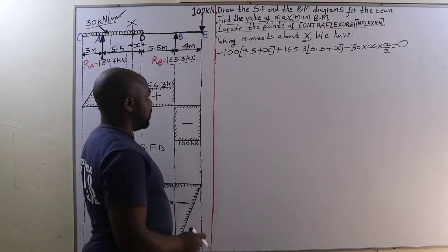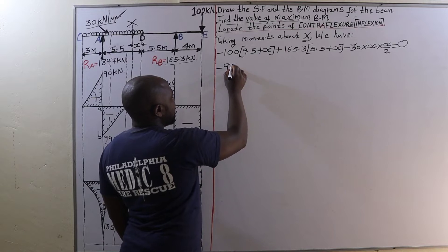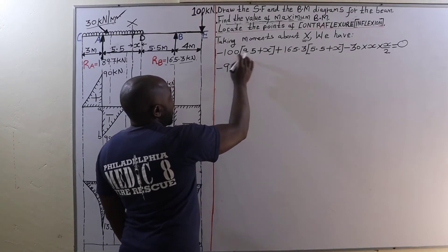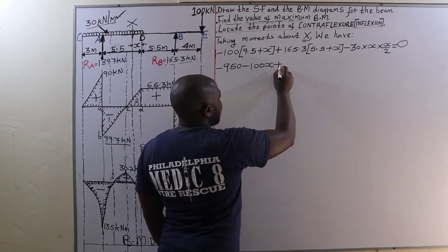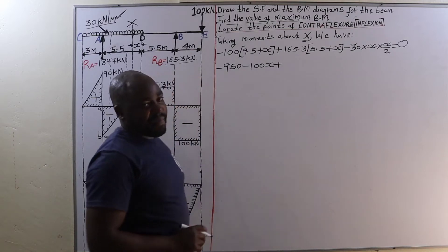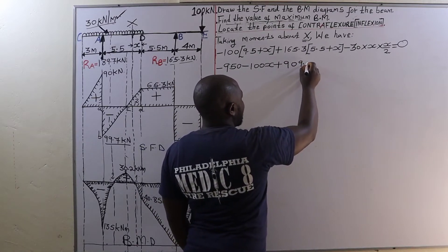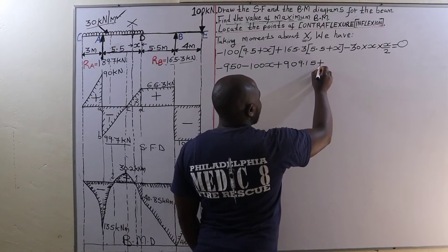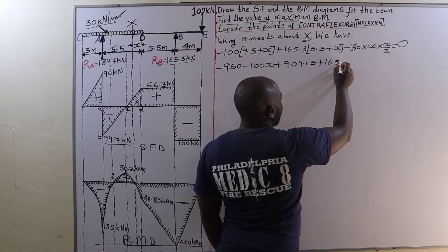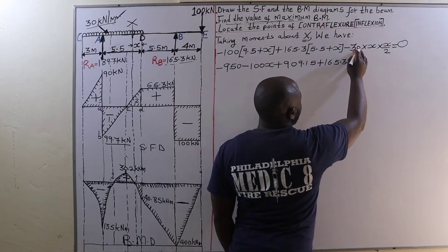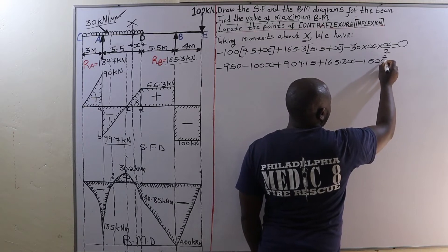Opening the brackets: negative 100 times 9.5 gives negative 950, minus 100x. Then 165.3 times 5.5 gives 909.15, plus 165.3x. Then the UDL term gives minus 15x squared.